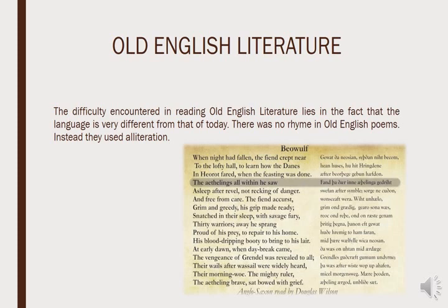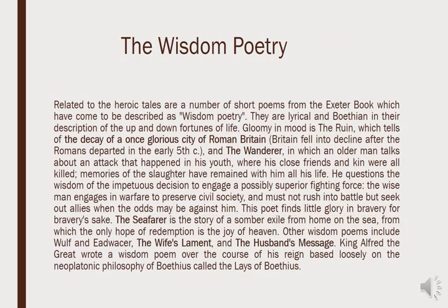Even the first line 'when the night had fallen, the fiend crept near' shows alliteration — 'fallen' and 'fiend' both begin with the same sound. So we find alliteration throughout the Anglo-Saxon period.